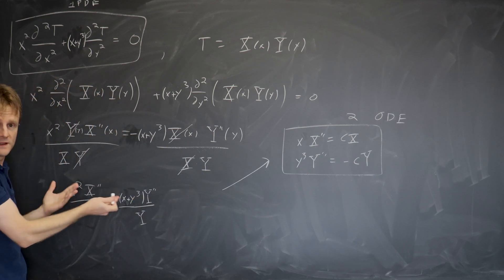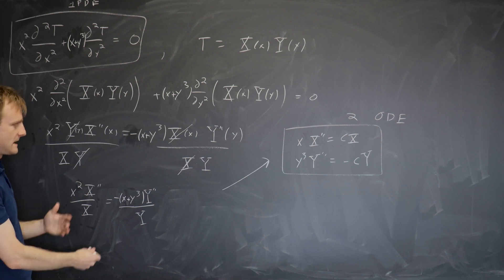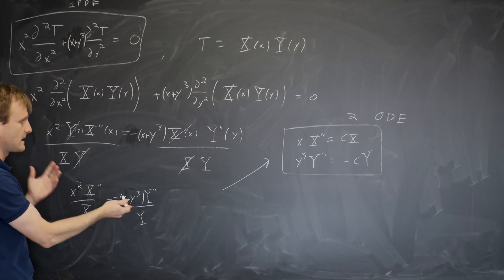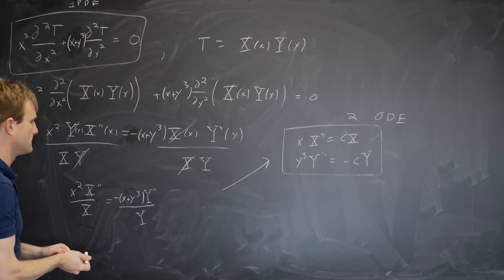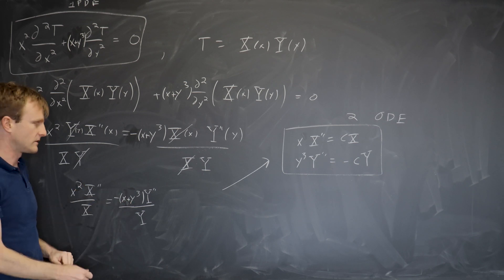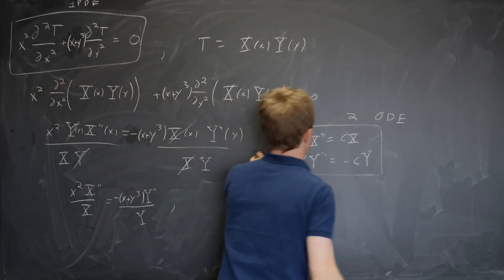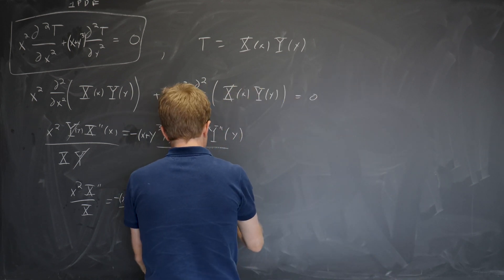So in this case, there's nothing I can do. I certainly cannot conclude that both sides are constant because I don't have the argument that both sides only depended on their respective variable. It's just all mixed up. I cannot solve the equations. It is not separable.